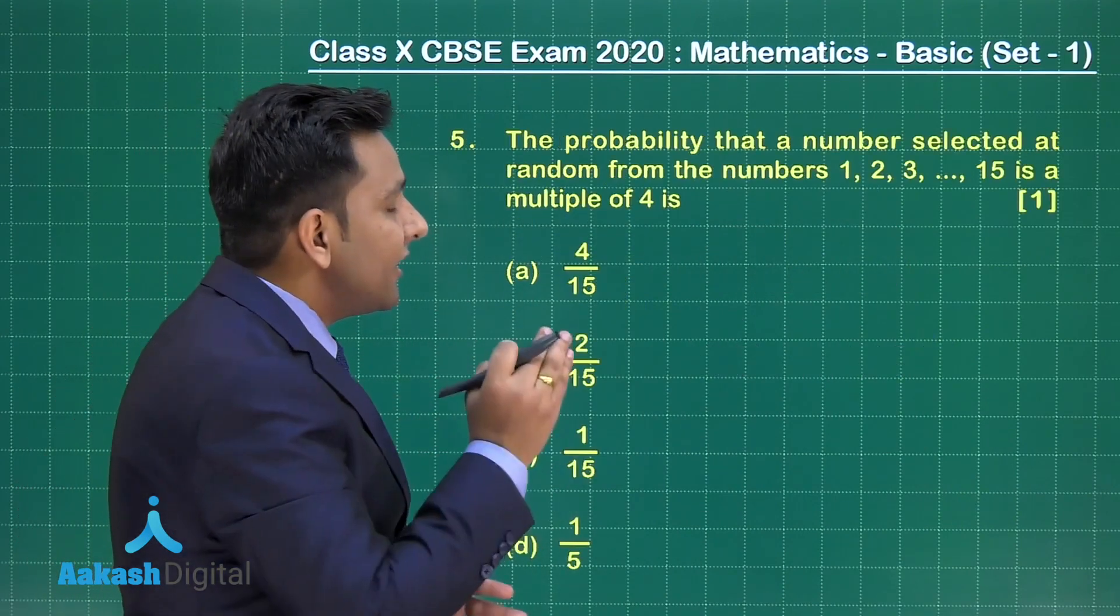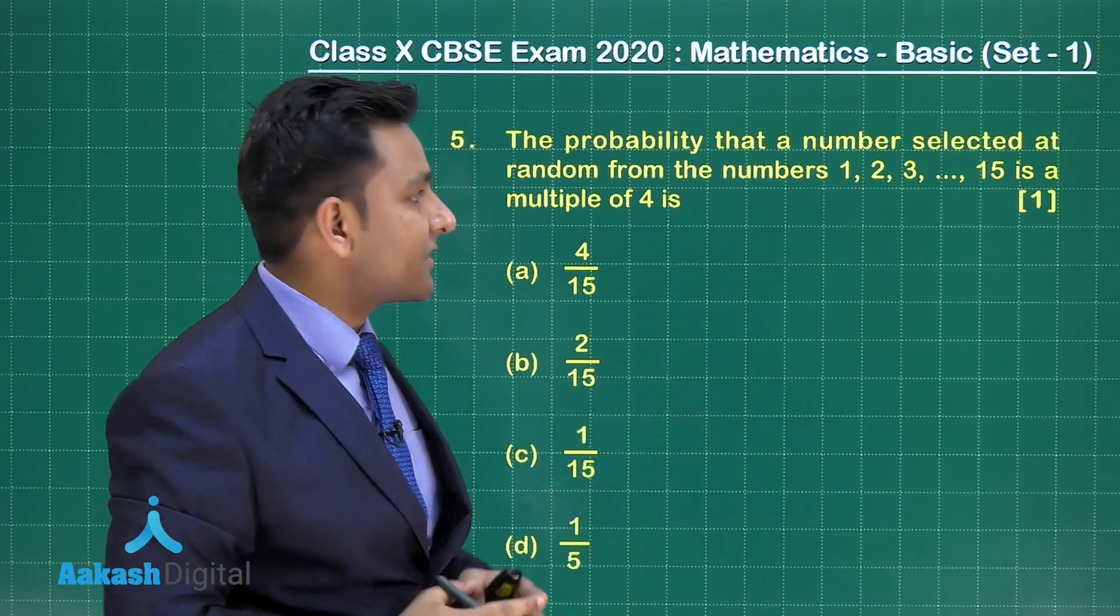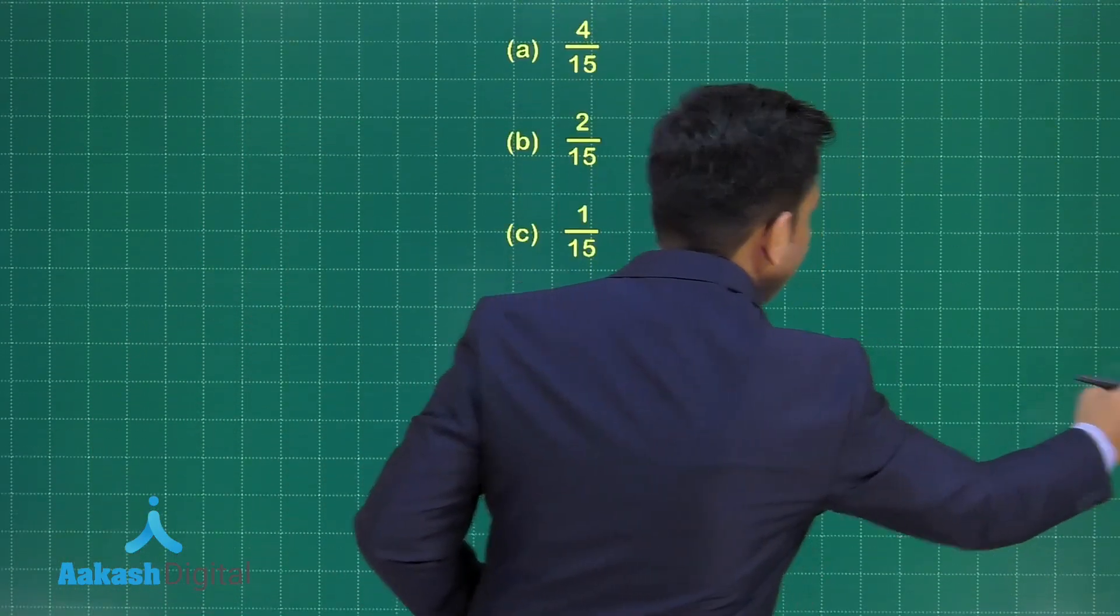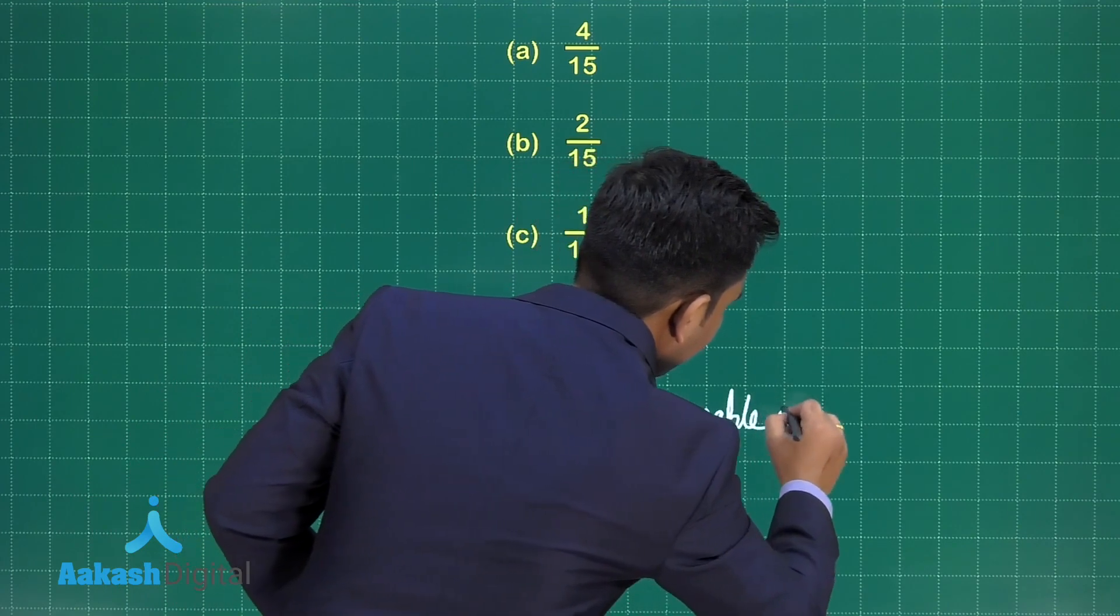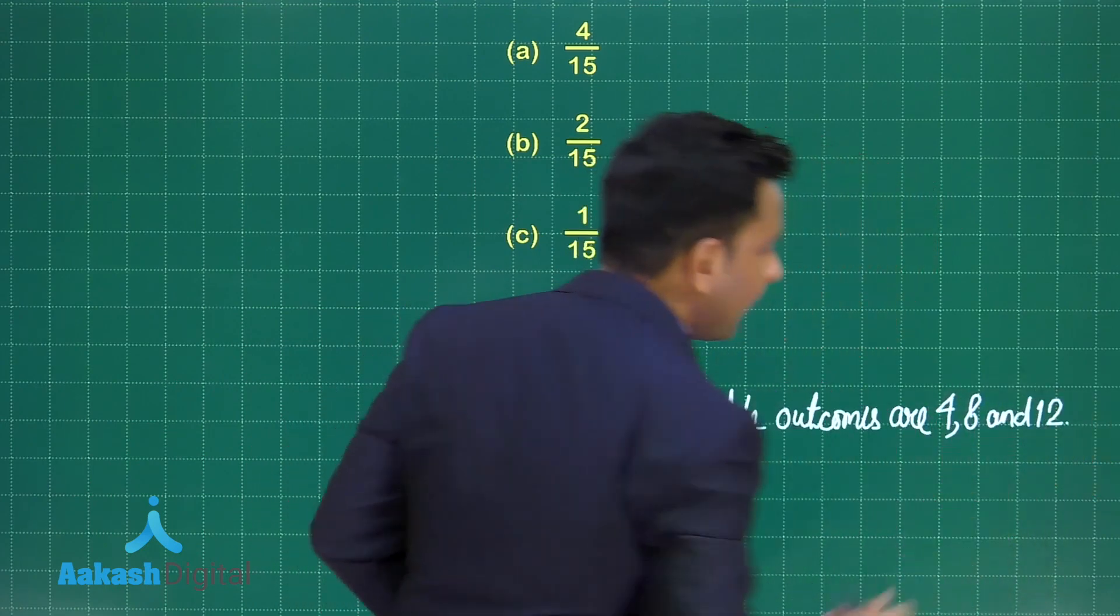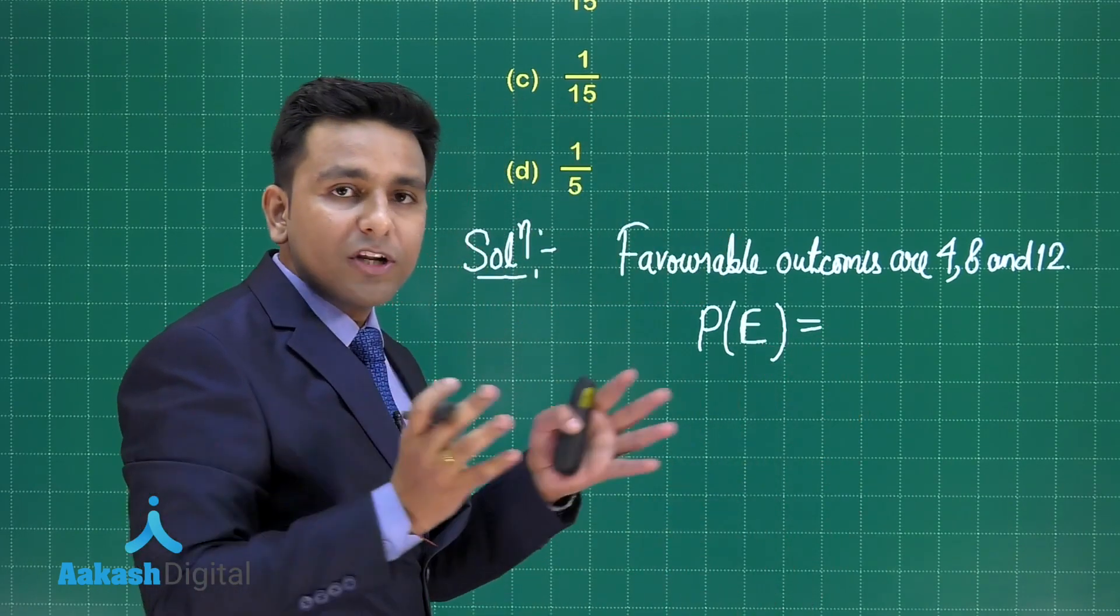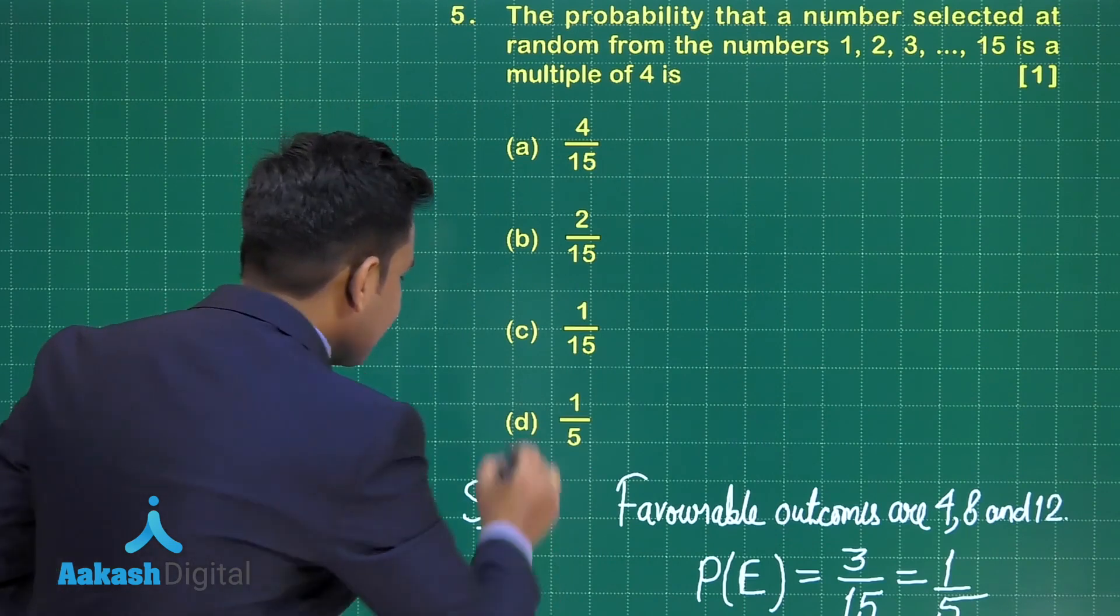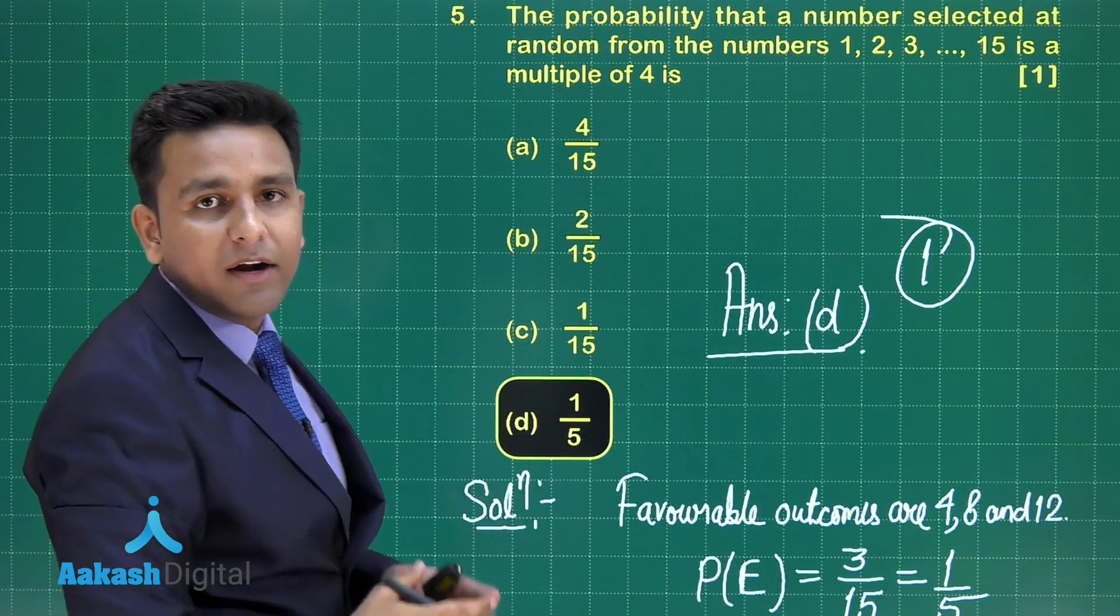This question states: the probability that a number selected at random from the numbers 1, 2, 3 and so on till 15, that means we have first 15 natural numbers, is a multiple of 4. Multiple of 4 means 4, 8, 12, because we have to find the multiples till 15. Let us solve this question based on the concept of probability. First we will write favorable outcomes. Favorable outcomes are 4, 8 and 12 out of first 15 natural numbers. So the probability of the occurrence of this event is favorable outcome divided by the total possible outcome. So I can write here 3 divided by 15, and the answer for this question is 1 upon 5. Out of the given four options, we can see that it is given in option number D. If you have marked this, then you can score again one mark for this question. I hope it is clear to everyone.